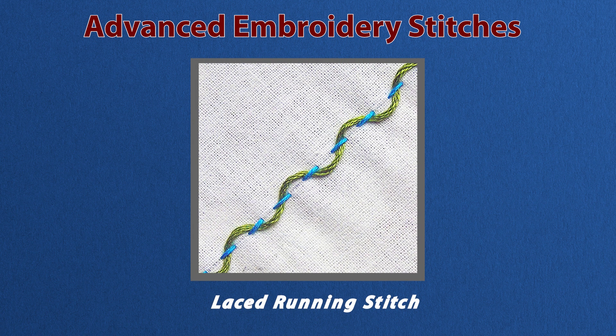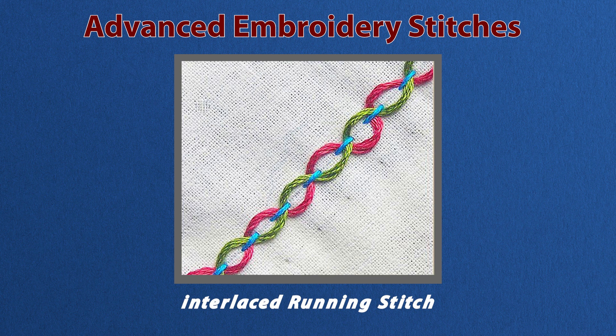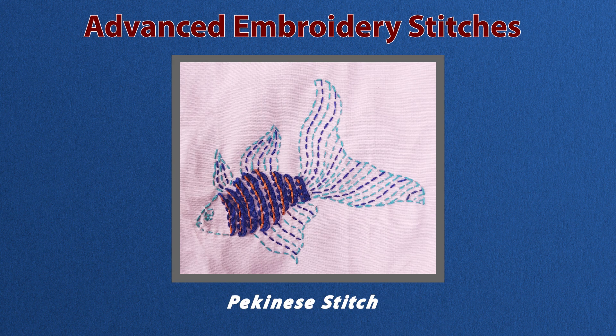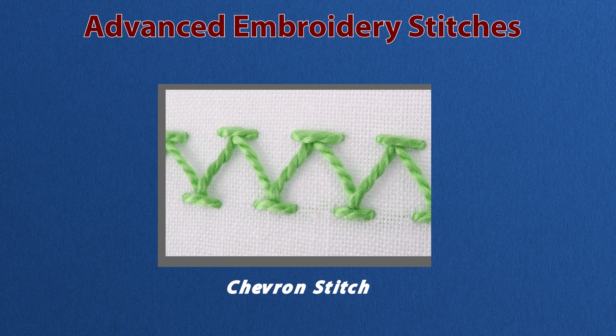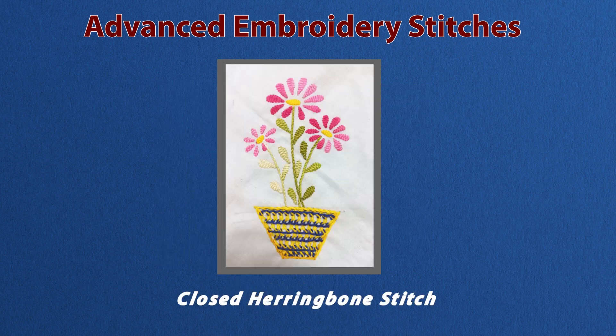The advanced hand embroidery stitches include padded satin, threaded back stitch, laced running stitch, interlaced running stitch, Pekinese stitch, chevron stitch, closed herringbone stitch and others. All the embroidery stitches need a lot of hard work and patience to achieve a perfect and well-finished look. The students will learn the basic stitches in class 9th and the advanced stitches in class 10th, and can also practice many stitches as per their creativity.